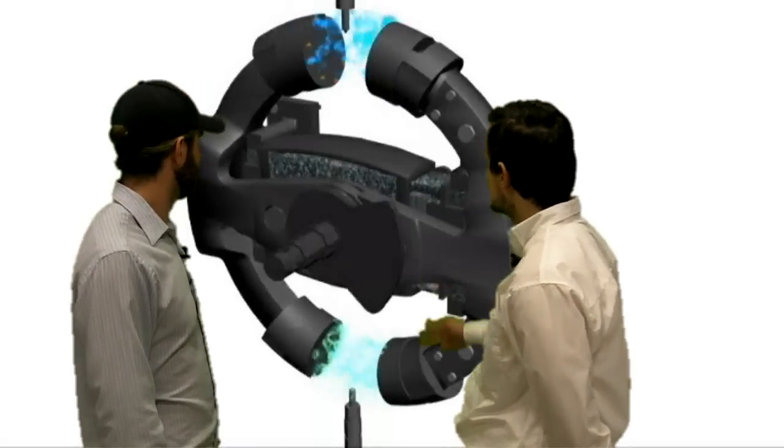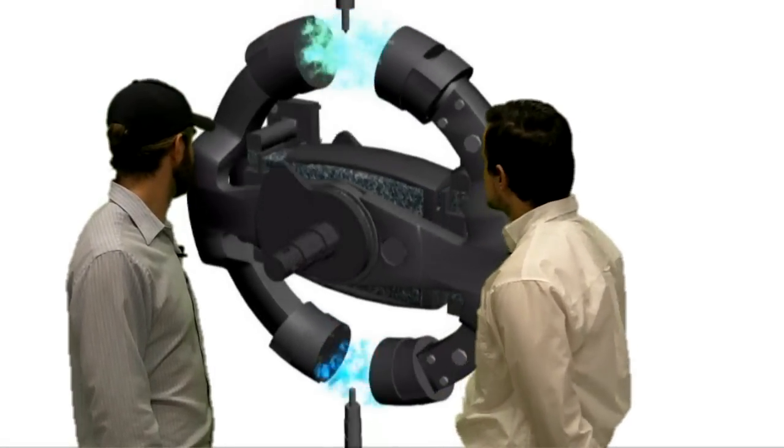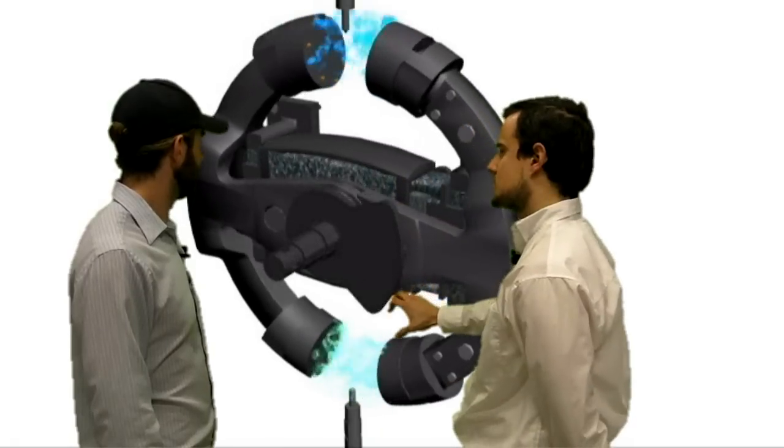So Heinz, can you tell me about how the CHB engine family works? Sure, Andy. Well, as you can see here from the animation, the engine is comprised of two combustion chambers.